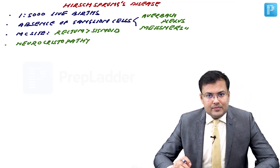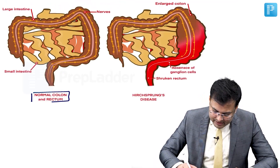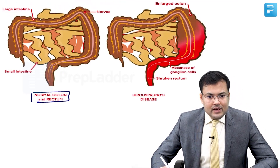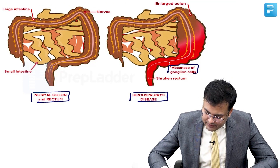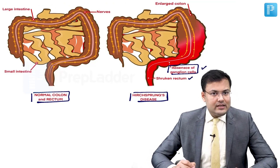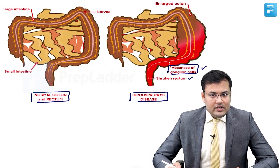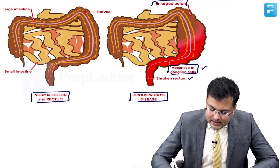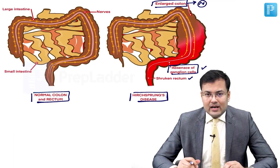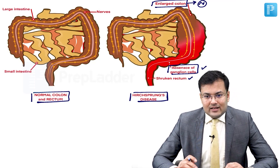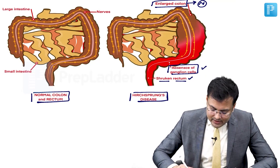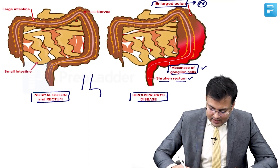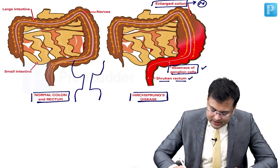In Hirschsprung's disease, there is absence of ganglion cells in the sigmoid as well as the rectum. The proximal part of the colon, which is normal, becomes dilated or enlarged, while the affected segment is contracted. So there is a shrunken or contracted rectum with a dilated proximal segment.